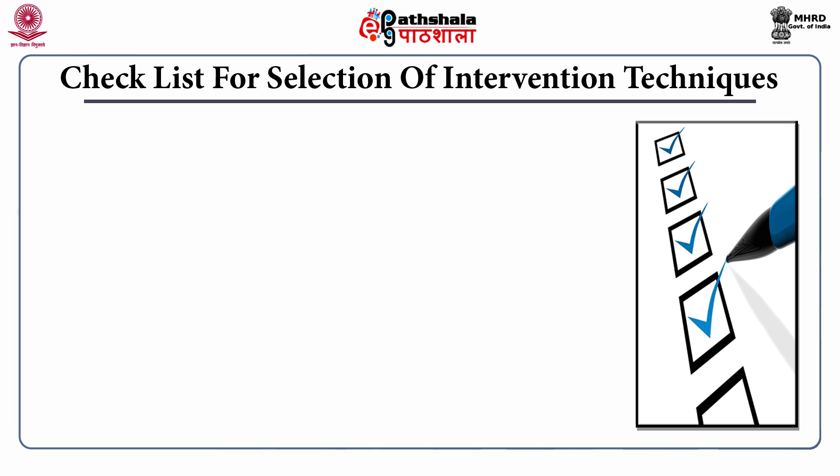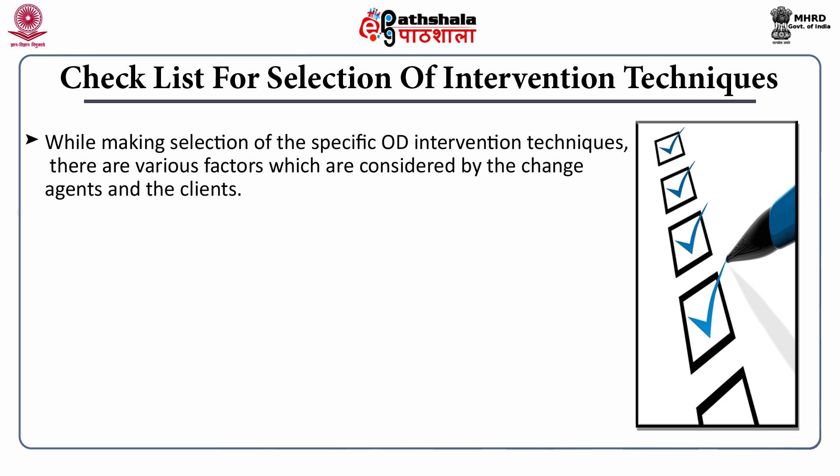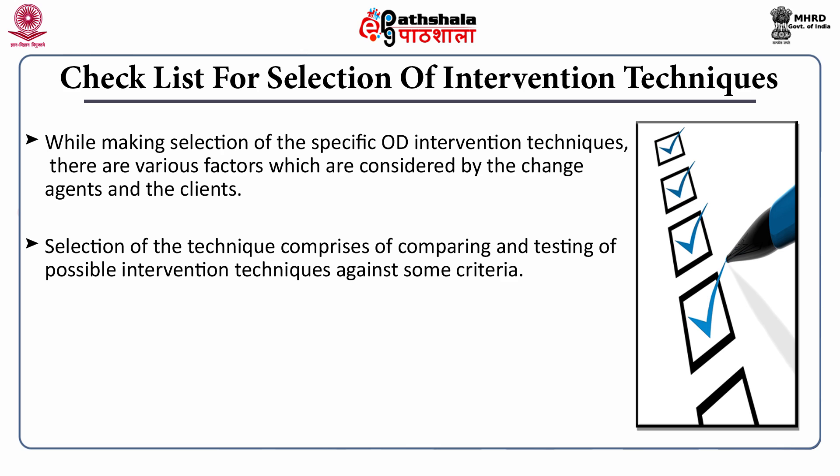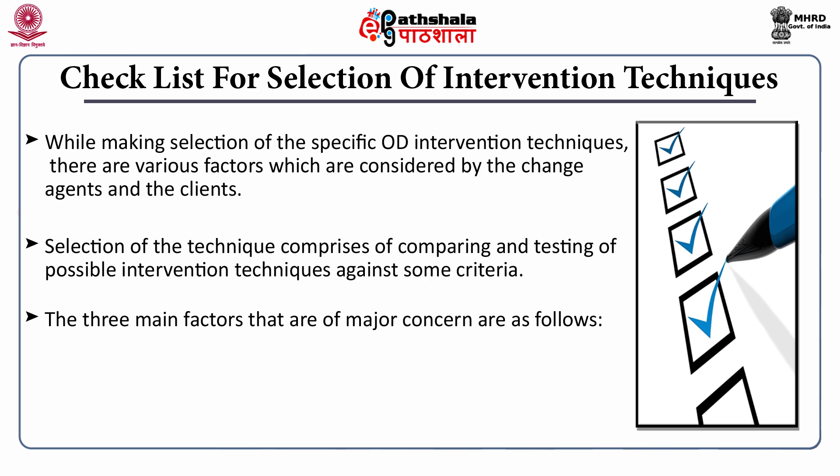Checklist for selection of intervention techniques. While making a selection of specific OD intervention techniques, there are various factors considered by the change agents and the clients. Some of them are: nature of problems, objectives of change efforts, cultural norms of the client system, and expected degree of resistance. The selection of the technique comprises comparing and testing possible intervention techniques against some criteria.